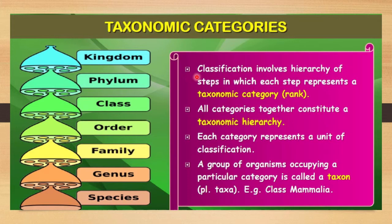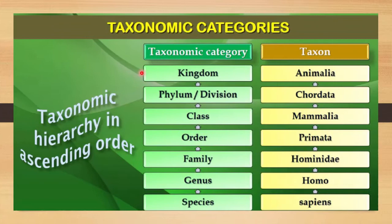Classification involves a hierarchy of steps in which each step represents a taxonomic category, also called a rank. All categories together constitute a taxonomic hierarchy. Each category represents a unit of classification. A group of organisms occupying a particular category is called a taxon, and plurally we say taxa. For example, class Mammalia is one type of taxa.